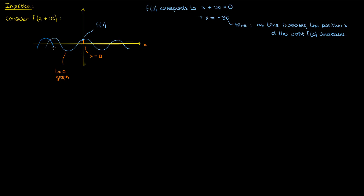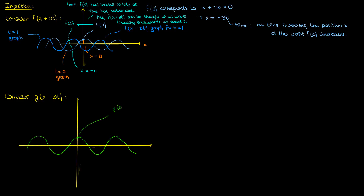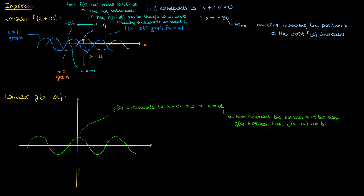When x plus vt is zero and t is zero, that automatically means x is zero. Now when I draw this graph for time t equals one with the same function f of x plus vt, the point f of zero will correspond to x equals negative v. So the point f of zero has moved leftward in space as time advanced — the same is true for f of one, f of two, and so on. In effect, f of x plus vt can be thought of as a wave traveling leftwards or backwards at a speed of v. Next, let's consider g of x minus vt. The point g of zero corresponds to x minus vt equals zero, so x equals vt. As time increases, the position x of the point g of zero increases, meaning g of x minus vt travels rightwards or forwards at a speed of v.